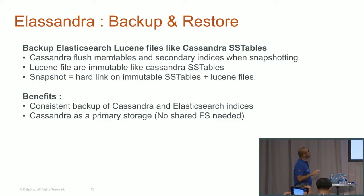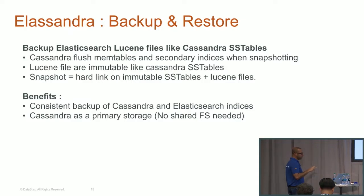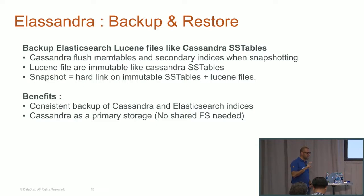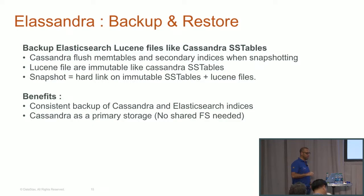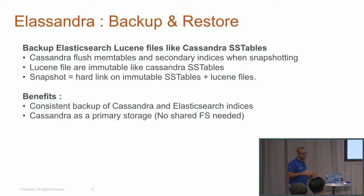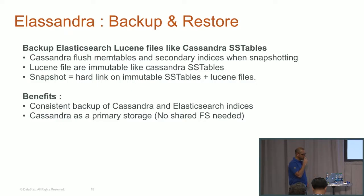For backup and restore: Cassandra naturally flushes memtables to disk to build backups, and this also flushes secondary indices — which works for our Elasticsearch indices. It involves a flush of Lucene files. Like Cassandra SSTables, you just back up the Lucene files and SSTables together to make a consistent snapshot. You can also restore only your SSTables and rebuild your Elasticsearch indices, but it is much more resource-consuming. This means you can use Cassandra as a primary data store and back up both Cassandra data and Elasticsearch indices.